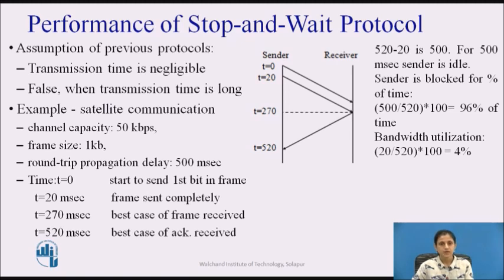As an example, consider a 50 kbps satellite channel with a 500 ms round trip propagation delay. Let us imagine trying to use protocol 4, i.e., the 1-bit sliding window protocol, to send 1000-bit frames via the satellite. At t = 0, the sender starts sending the first frame. At t = 20 ms, the frame has been completely sent.